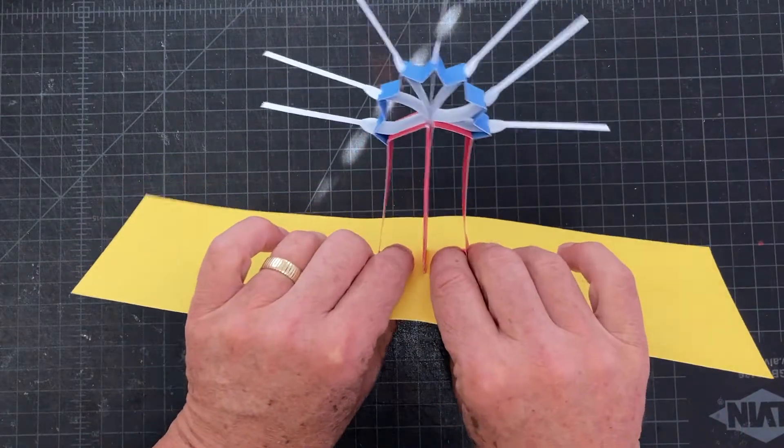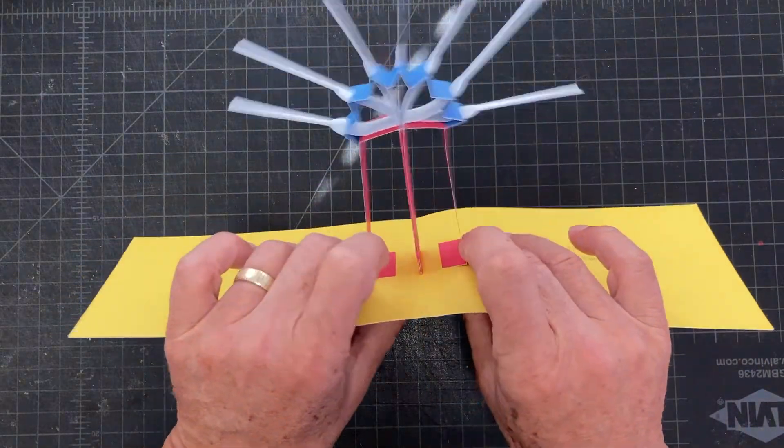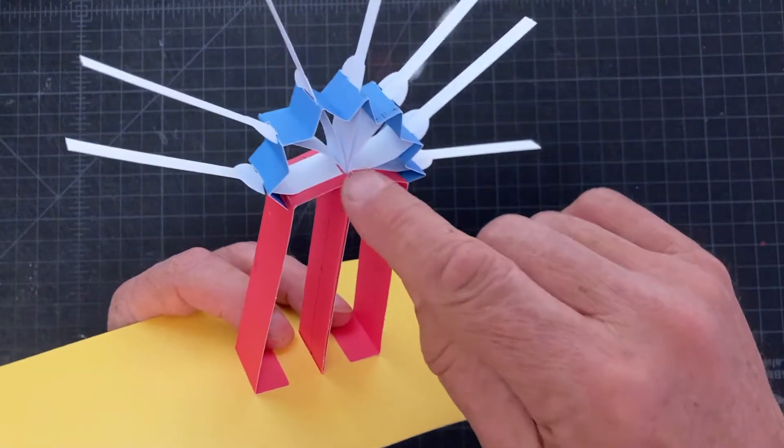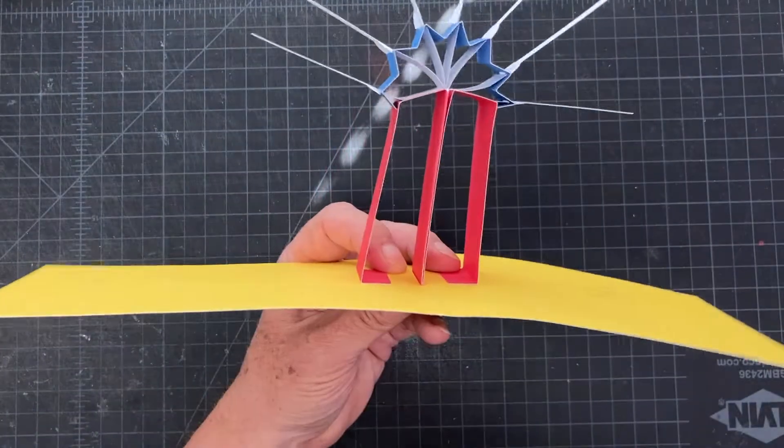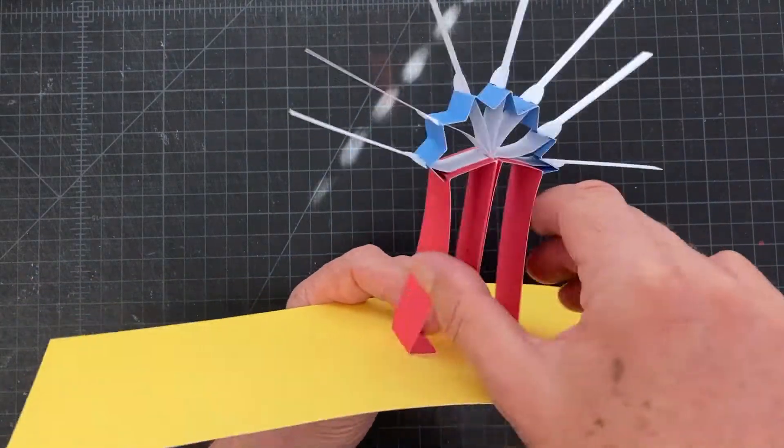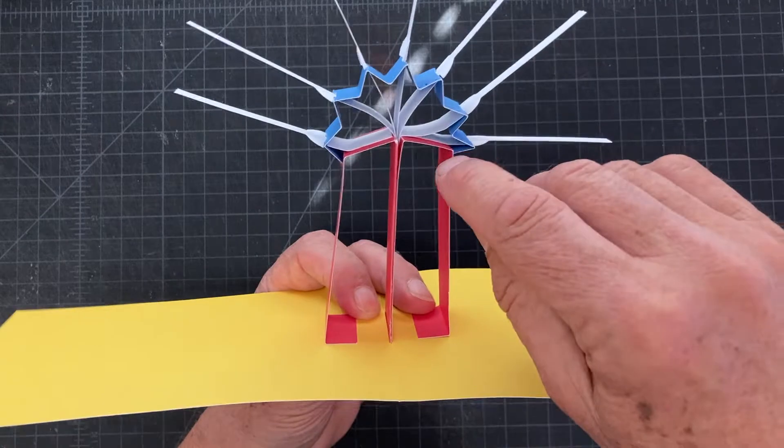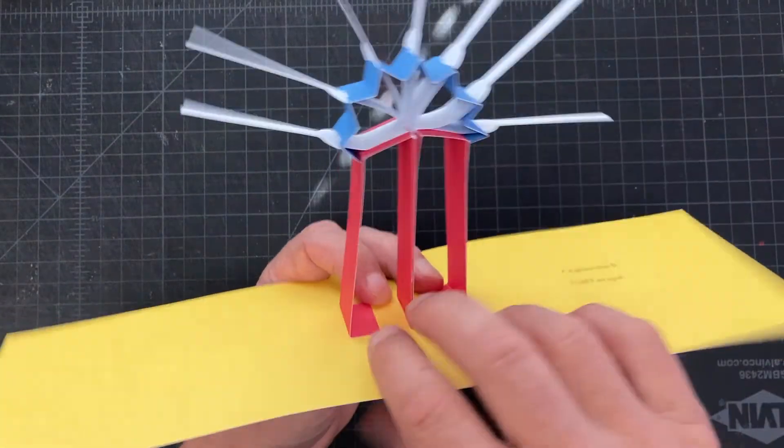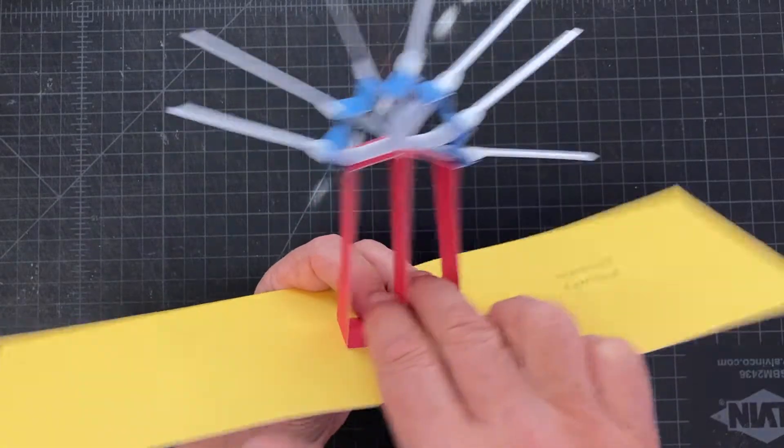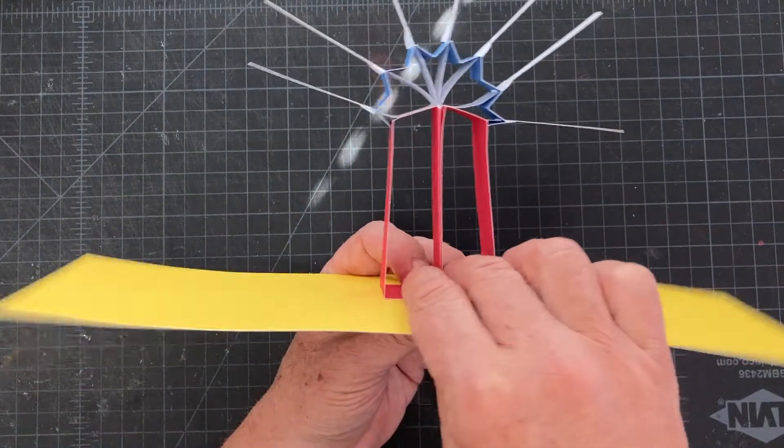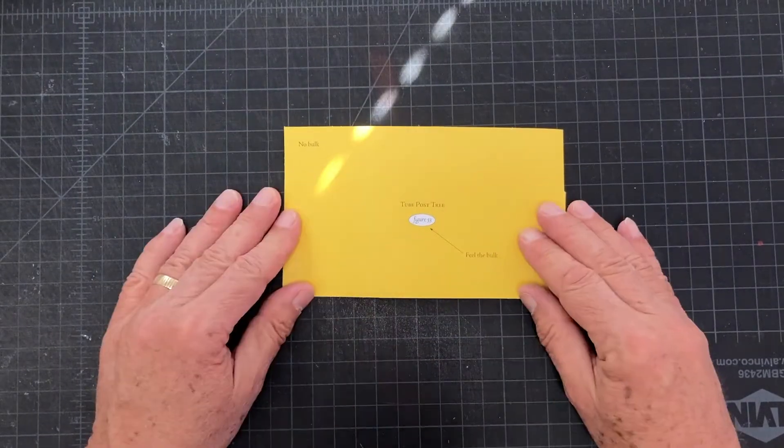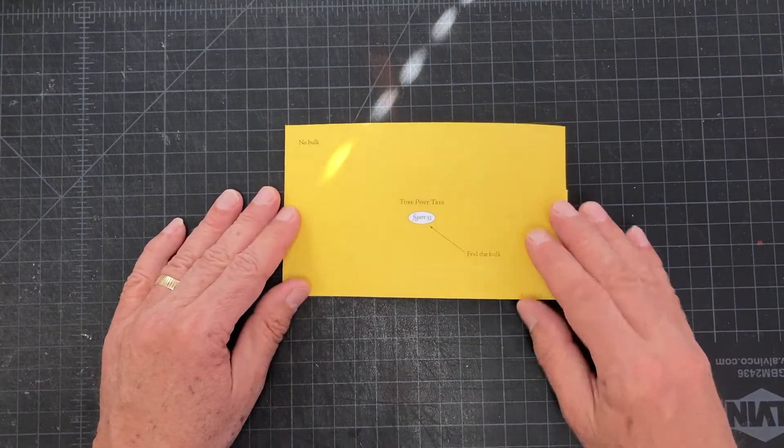Another thing to notice on this—a lot of times with the platforms, the tube post platforms, we make all the legs equal. When the legs are equal, it has a tendency to rock back and forth. There's no control, but I've shortened these two legs, and that stabilizes the structure a bit. So just something to think about there. There we go. Tube post tree, figure number 53.